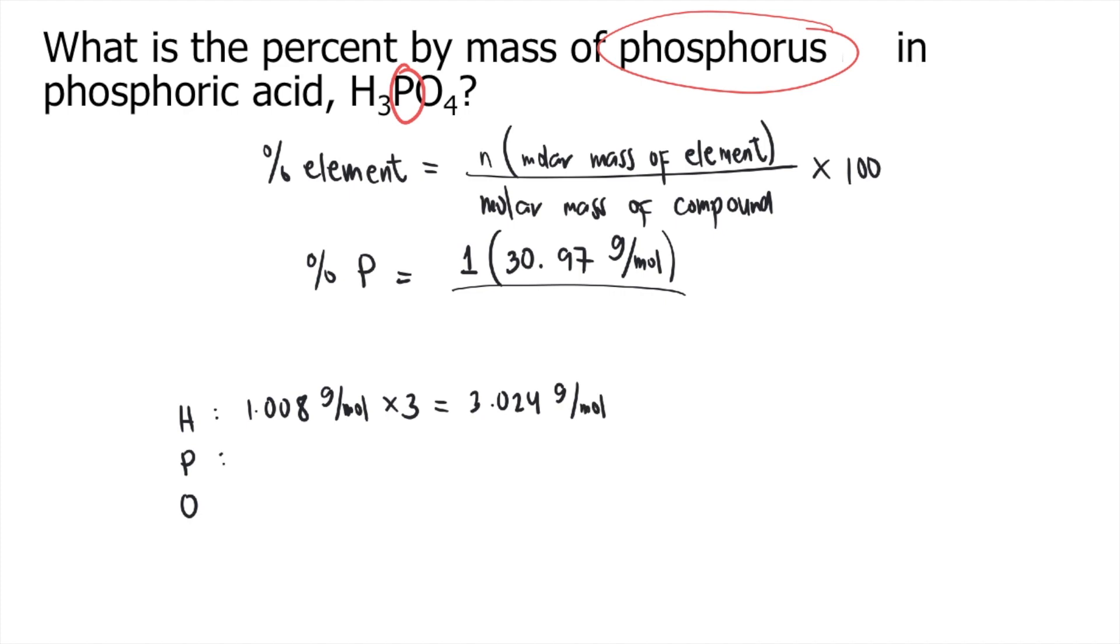Phosphorus, the molar mass is 30.97 grams per mole. And there's only one phosphorus in H3PO4. So that's 30.97 grams per mole.